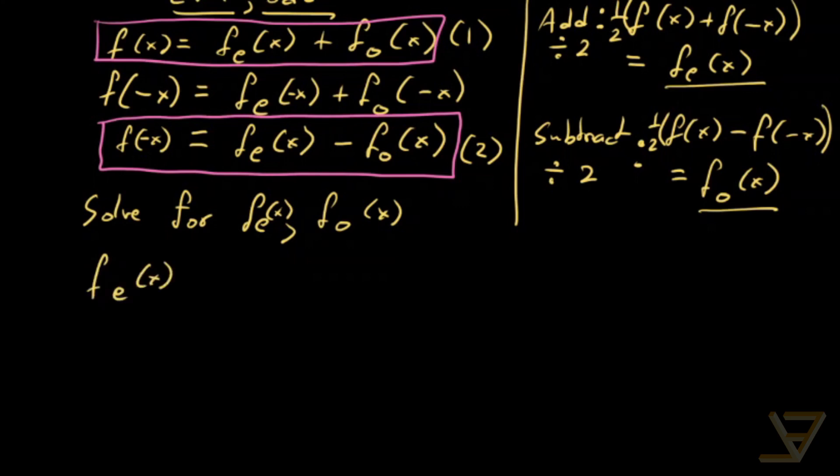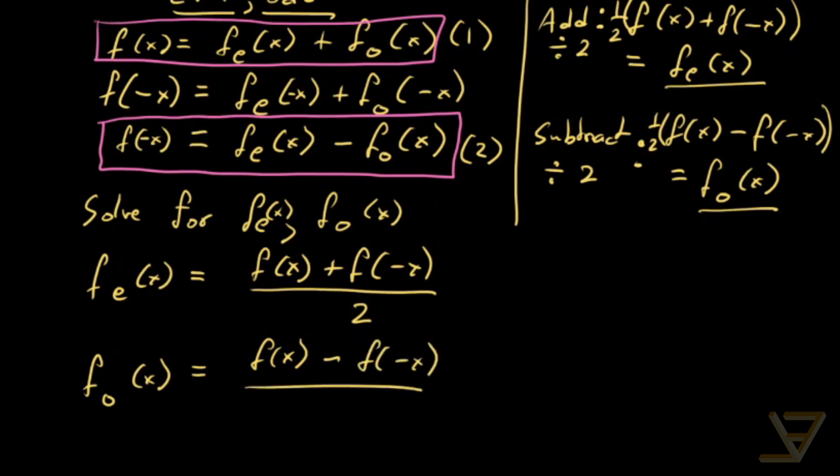So let me write these out for you so that it's clear exactly what's going on. f_e of x is equal to f of x plus f of negative x divided by two and f_o of x is equal to f of x minus f of negative x over two.